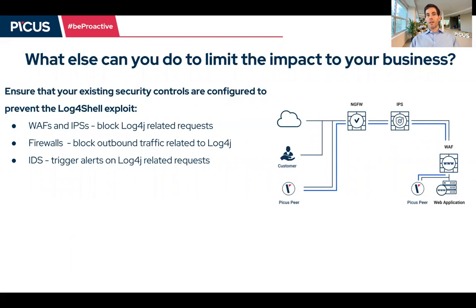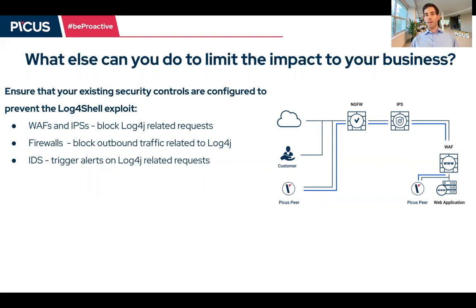This is why at PICUS we believe the only way to really limit the impact to your business right now is to ensure that your existing security controls are configured to prevent the Log4J exploit. You may not be aware of all the systems that leverage Log4J, but hopefully your critical assets are behind web application firewalls or are protected by other security controls. It's really important that you ensure that your WAFs or your intrusion prevention systems block Log4J-related requests. You also have the option to prevent outbound connections on your firewalls or in your secure web gateways.